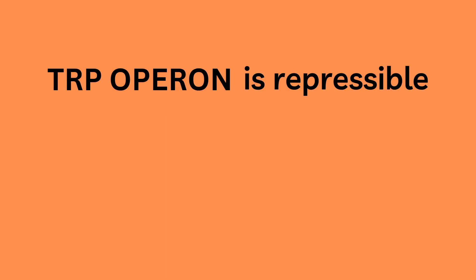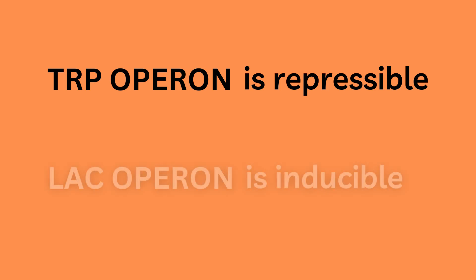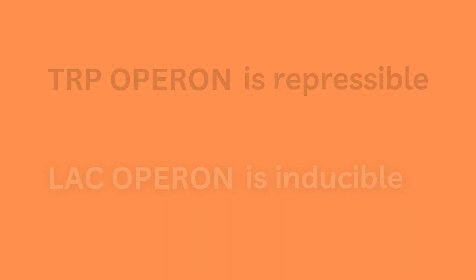The TRP operon is a repressible operon, as its genes are naturally expressed and only when an excess of tryptophan is present in the environment is it repressed. This is in contrast to the lac operon, which is naturally repressed and therefore said to be an inducible operon. If you wish to learn more about the lac operon, check out this video.